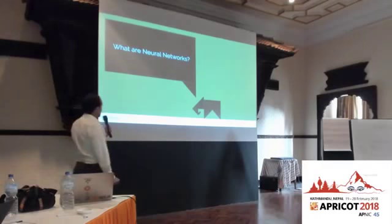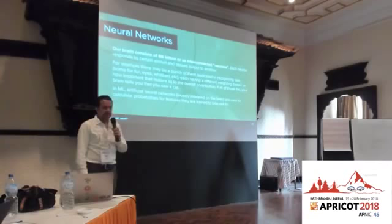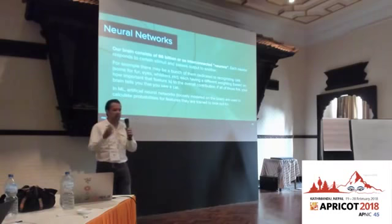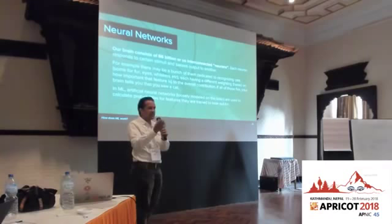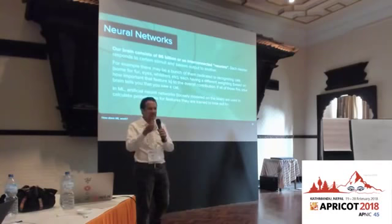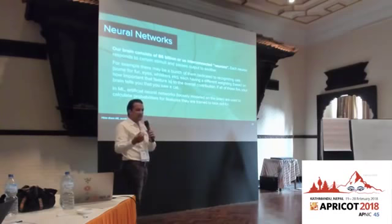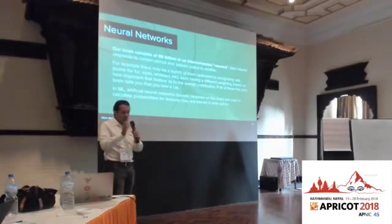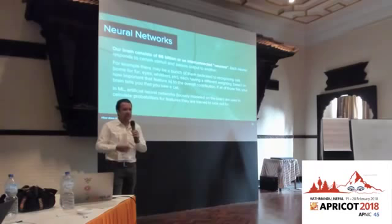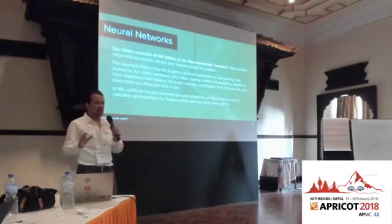That brings us to neural networks. Our brain consists of about 86 billion interconnected biological neurons, and each cluster responds to certain stimuli. When you see fur, neurons fire; when you see ears, other neurons fire; when you see eyes, more fire — and if all of those fire simultaneously, your brain tells you it's a cat. In machine learning, artificial neural networks, very loosely modeled on the brain, work similarly — calculating probabilities that get excited when they respond to certain features in the data.